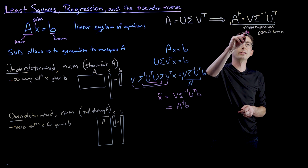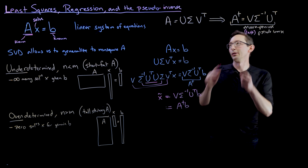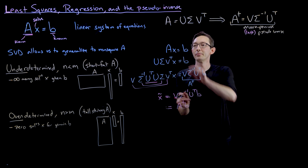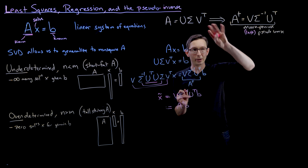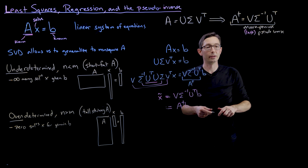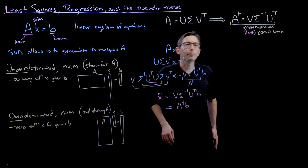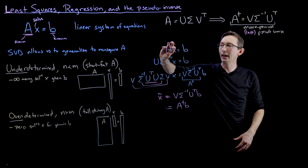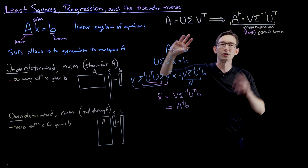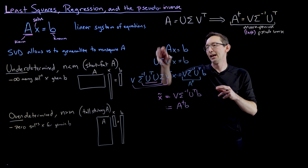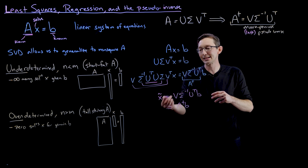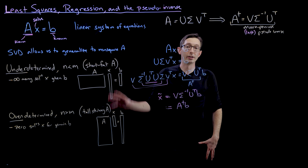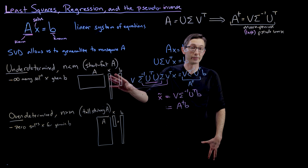Each factor cancels to the identity, and we're left with X tilde — our best approximation — equal to V sigma inverse U transpose B, which we define as A dagger B. That's the pseudo inverse. It's technically the left pseudo inverse because A is multiplying X on the left. We use the SVD of A to pseudo-invert A and solve for X.